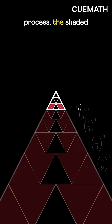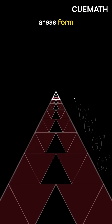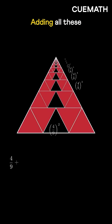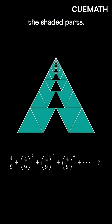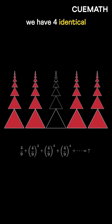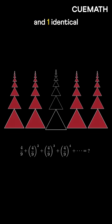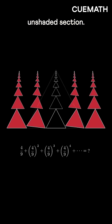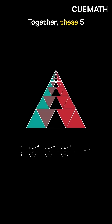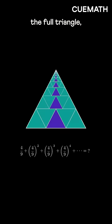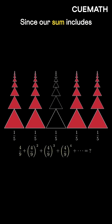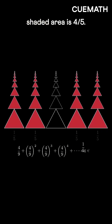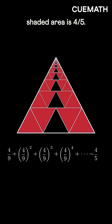If we continue this process, the shaded areas form a geometric sequence. Adding all these shaded areas gives us the total sum we need to find. Now if you look at the shaded parts, we have four identical shaded sections and one identical unshaded section. Together, these five parts make up the full triangle, so each part has an area of 1 by 5. Since our sum includes 4 of them, the total shaded area is 4 by 5.